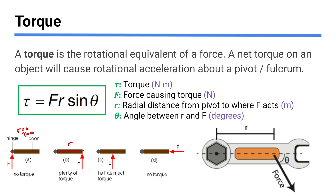Try opening a door by pushing in the middle — you'll notice it takes a lot more force to get it open. Or try pushing right next to the hinge: you'll definitely notice it takes a lot more force to cause the same rotation. So increasing R increases your torque. And if the angle is zero or 180 degrees, sine of zero or 180 is zero, so the torque would be zero. Pushing along the edge of the door like that won't make it rotate — and that's why.